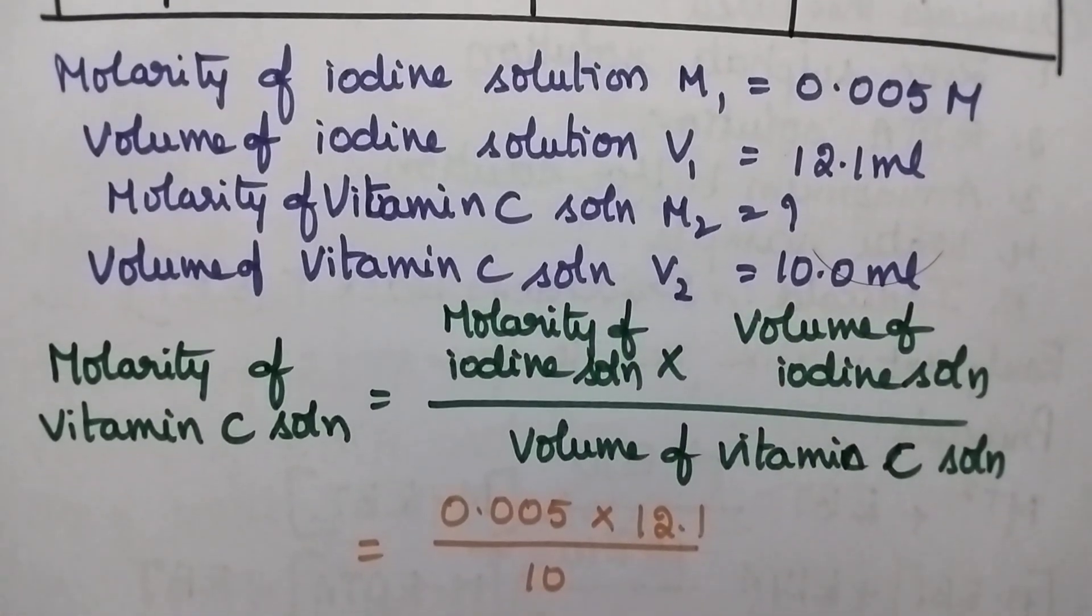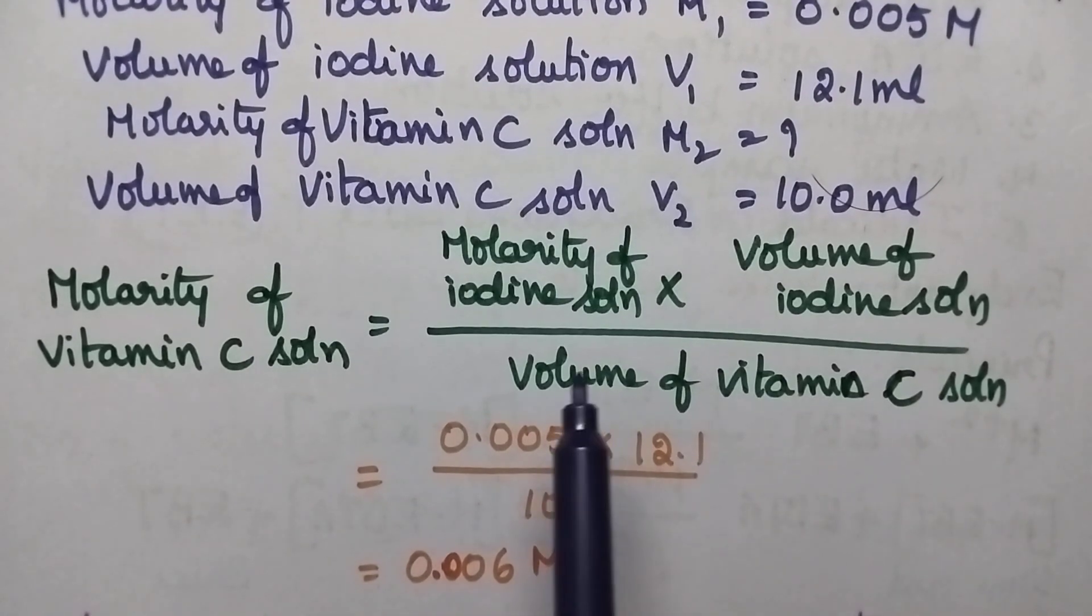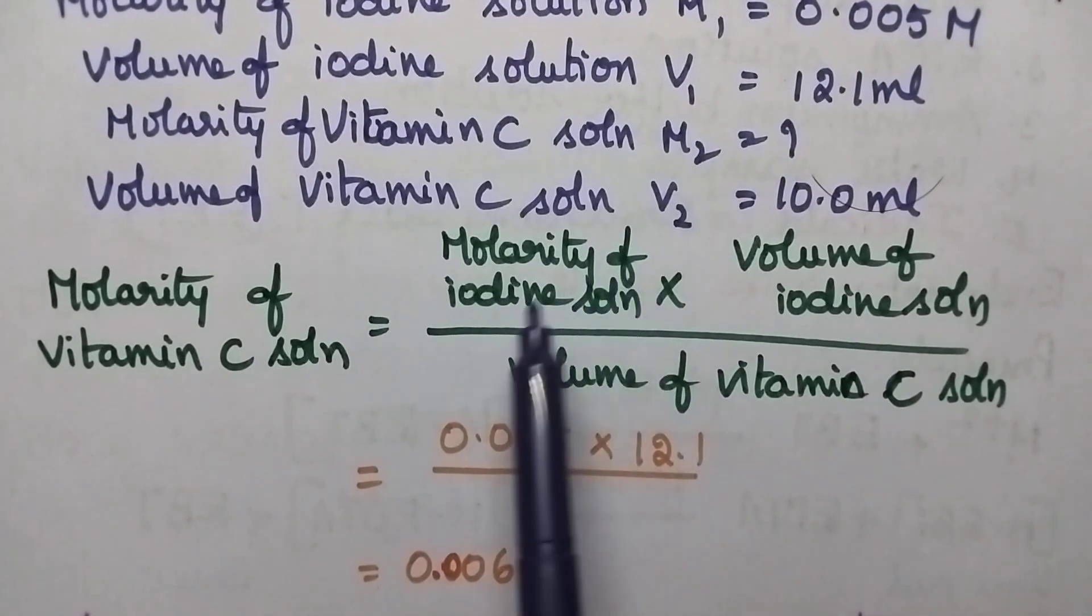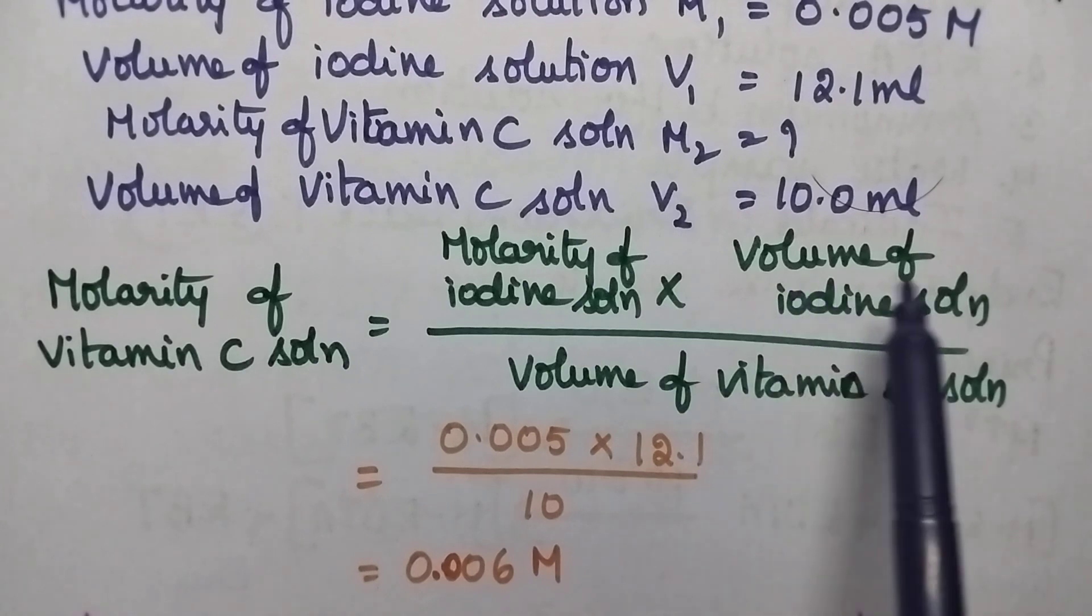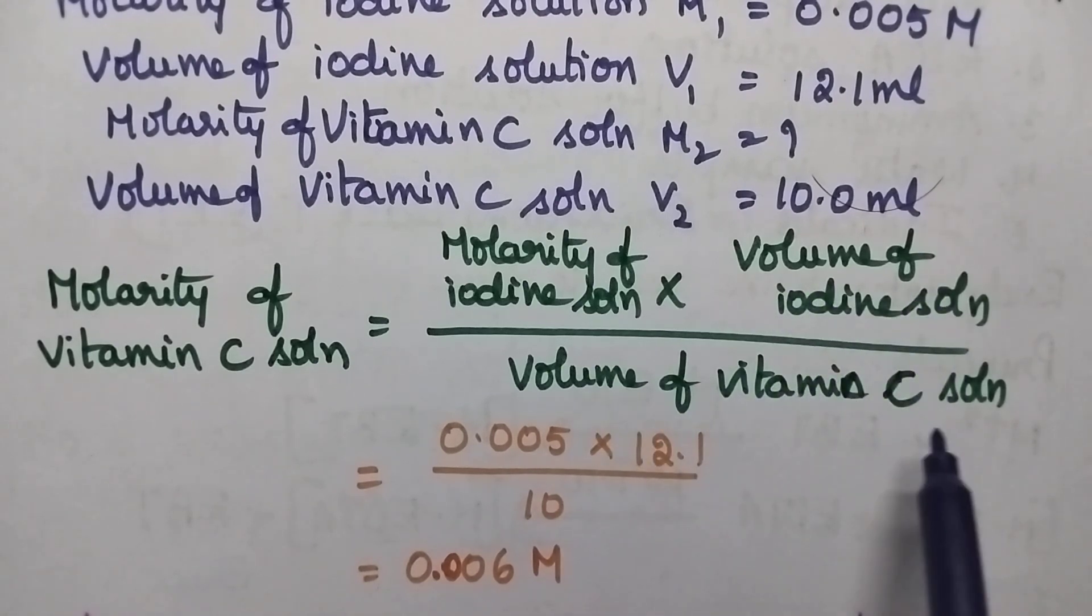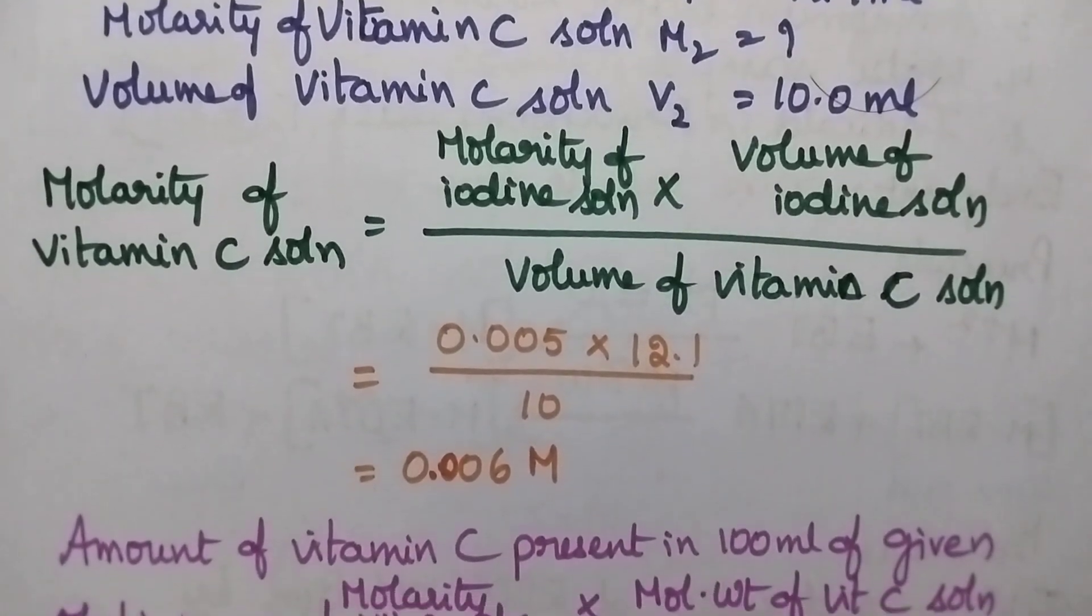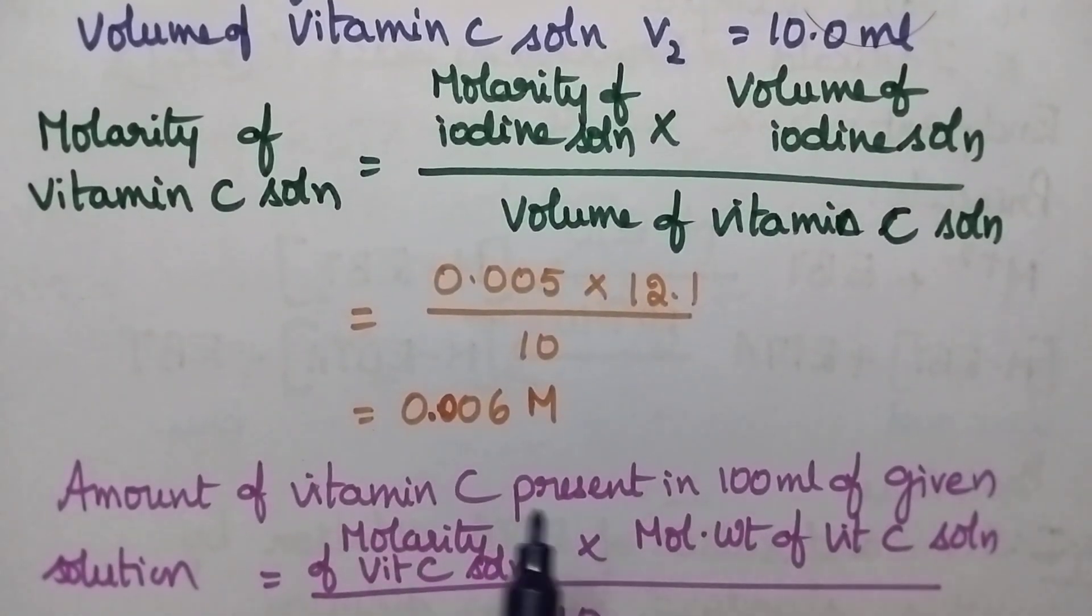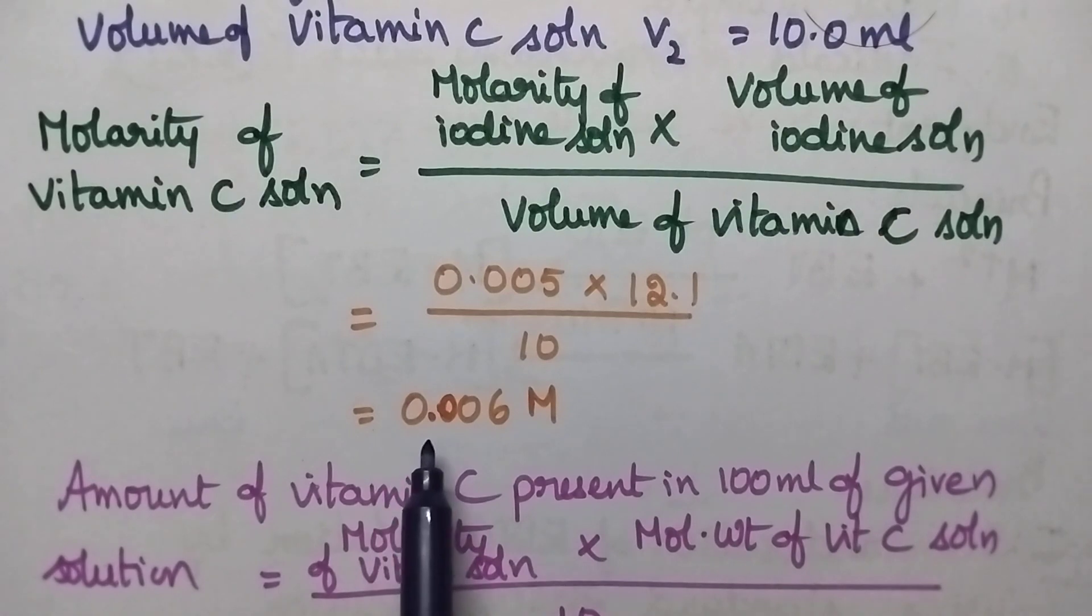The molarity of the vitamin C solution can be obtained by using the formula: molarity of the iodine solution times volume of the iodine solution divided by volume of vitamin C solution. On substituting the values, the molarity of the vitamin C solution is obtained as 0.006 molar.